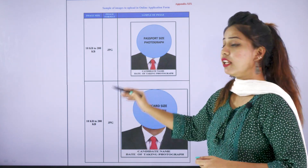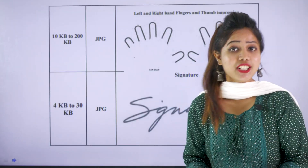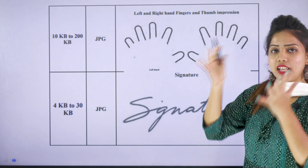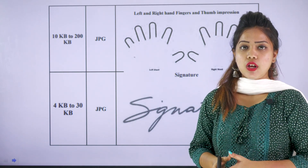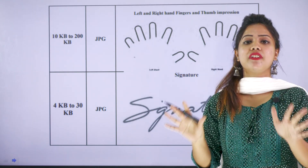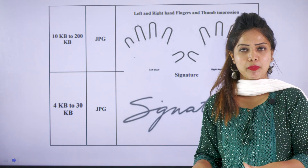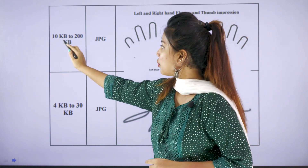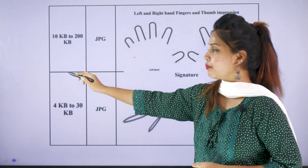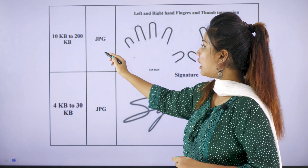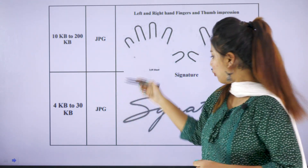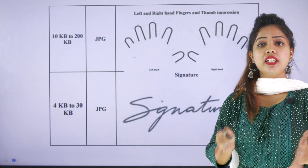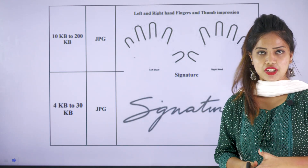The image format must be in JPG format. Next, you have to take your 10-finger impressions on A4 paper, then scan and upload it. The image size is 10 KB to 200 KB and must be in JPG format. For the next document, you need your signature.